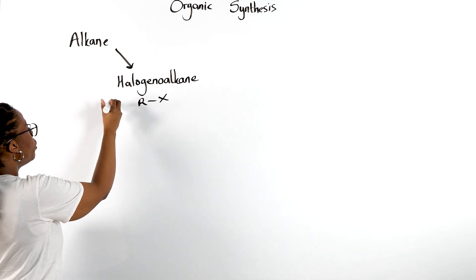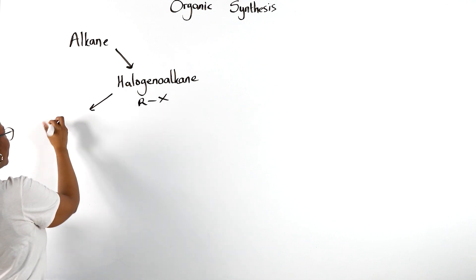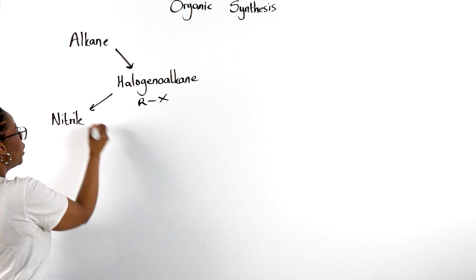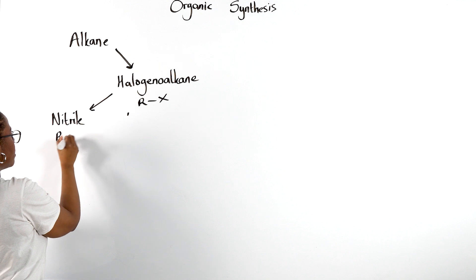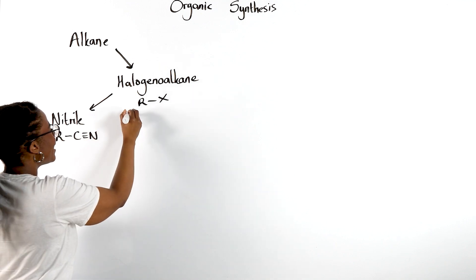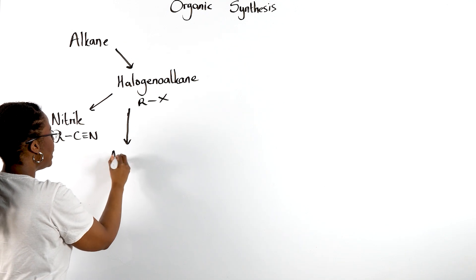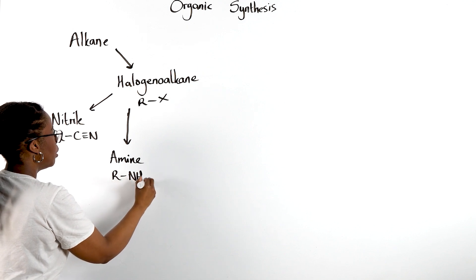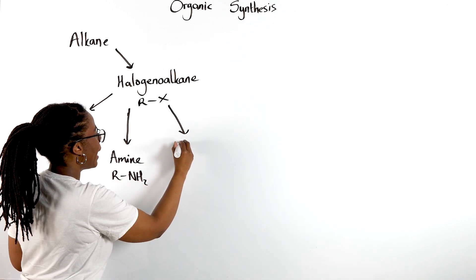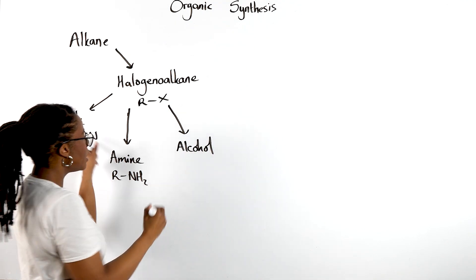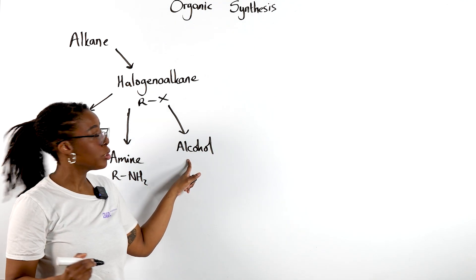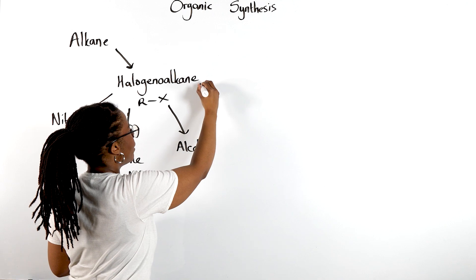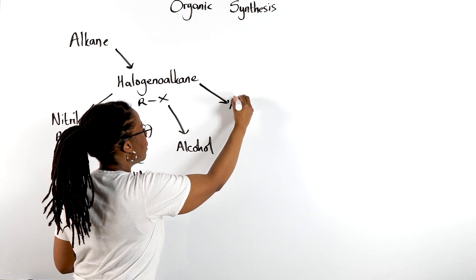Depending on which nucleophile we're using, that halogenoalkane can be converted into a nitrile. We can turn this halogenoalkane into an amine. We can turn this halogenoalkane into an alcohol. These are all our nucleophilic substitution reactions. Or we can also carry out elimination reactions and turn this halogenoalkane into an alkene.